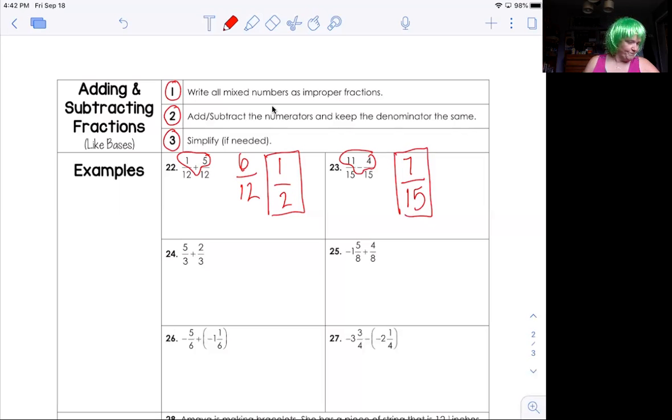Number 24. I've got five plus two on the top, which gives me seven over three. Now, earlier in step three, when they said simplify if needed, I'm going to say in parentheses, write that as a mixed number.